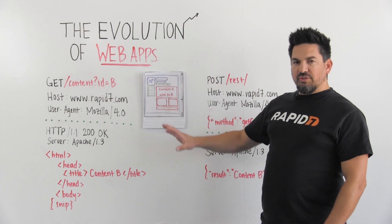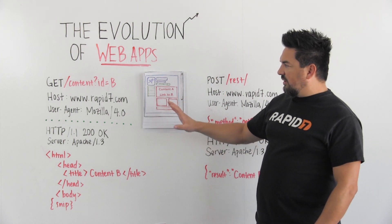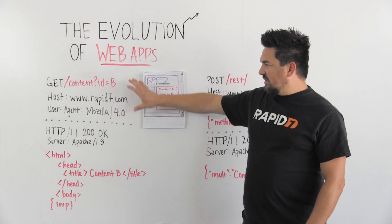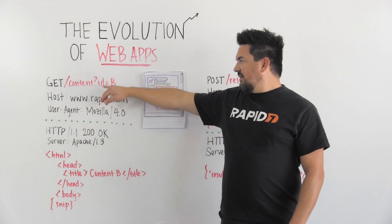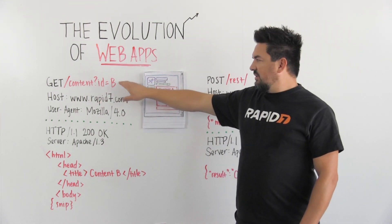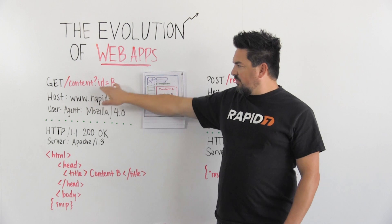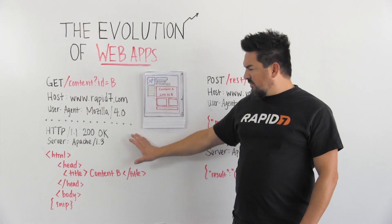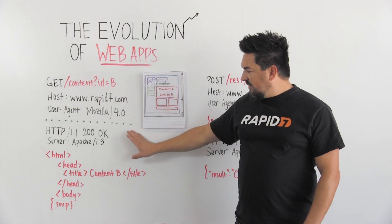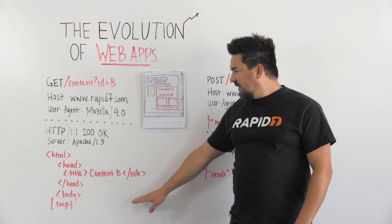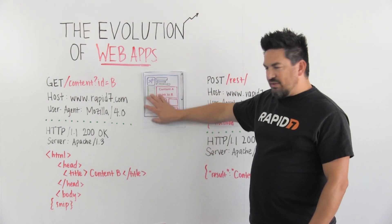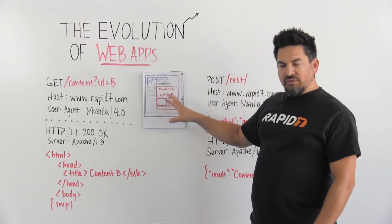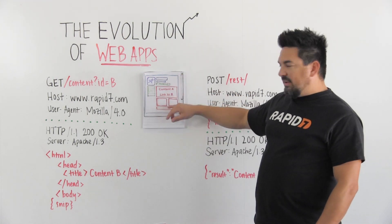The web when we first started was pretty straightforward. The browser would make a request to a server — in this case it would say 'get content id equals b'. So this is a parameter name and a value. It would make that request and the server would respond with a bunch of HTML. The web browser would then render that page and we'd have something to view.